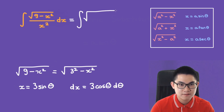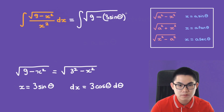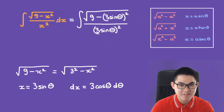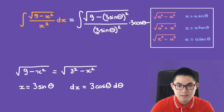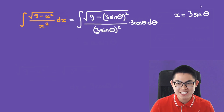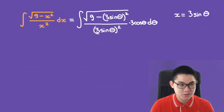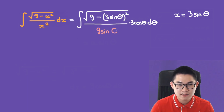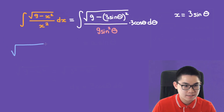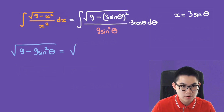We have the integral of √(9 minus x²) over x², with x = 3sinθ. So x² becomes (3sinθ)² = 9sin²θ. The numerator 9 minus 9sin²θ factors as 9(1 minus sin²θ), giving √(9(1 − sin²θ)).